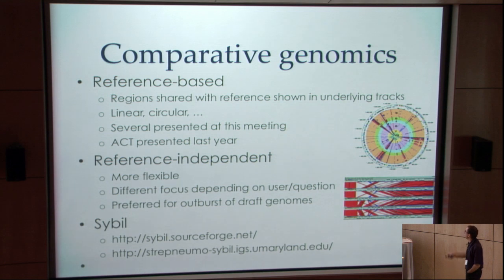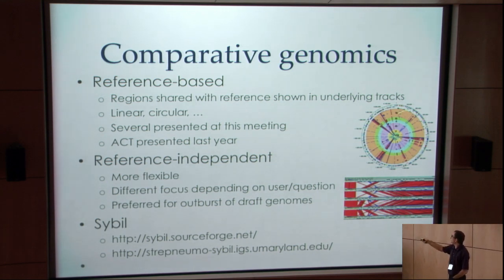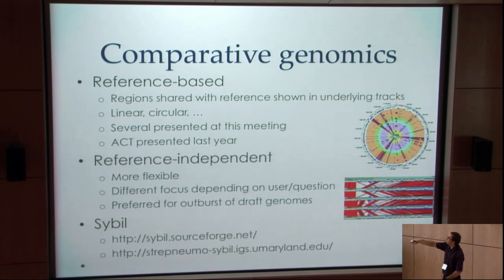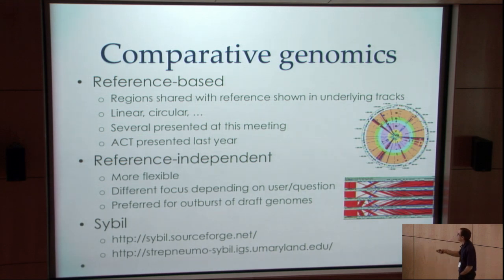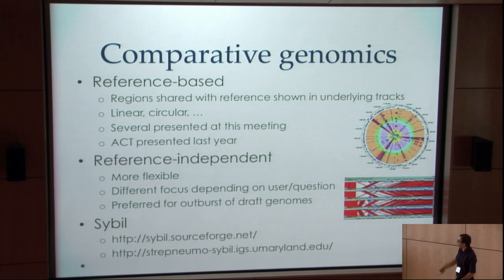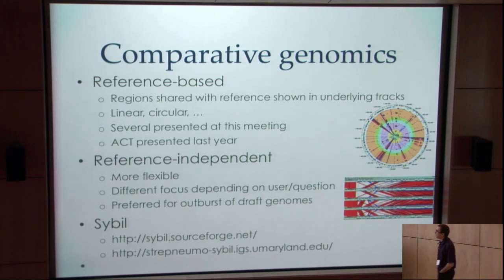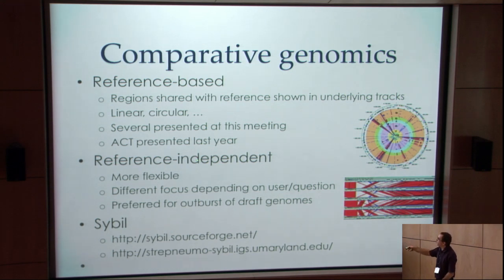This is one way of doing a circular view, showing diversity across a bunch of strains of different serotypes colored here. There are also tools like ACT — the Artemis Comparative Tool — that shows you the links between regions shared across different genomes based on certain criteria. All of these approaches are reference-based.